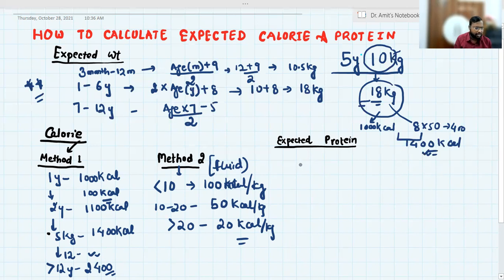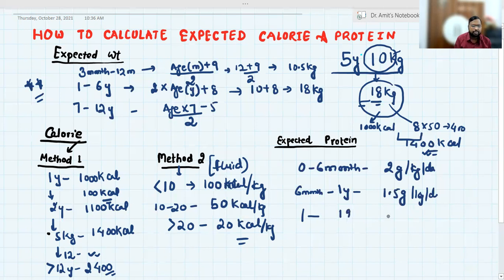So simply rough for 0 to 6 month, the requirement of protein is around 2 grams per kg per day. For 6 months to 1 year, we have 1.5 grams per kg per day. And 1 to 12 years, 1 gram per kg per day. And beyond 12 years, again 2 grams per kg per day.